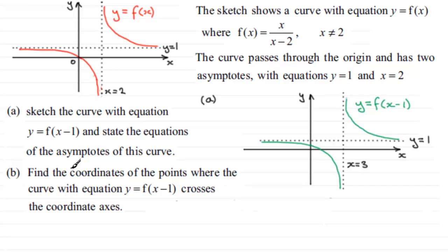Now in part B, we've got to find the coordinates of the points where the curve with this equation, y equals f of x minus 1, crosses the coordinate axes. So in other words, we've got to find this point here and here. To do this, what I need to do is find out what this equation is. What do we get when we substitute x or replace x with x minus 1 in the original equation?